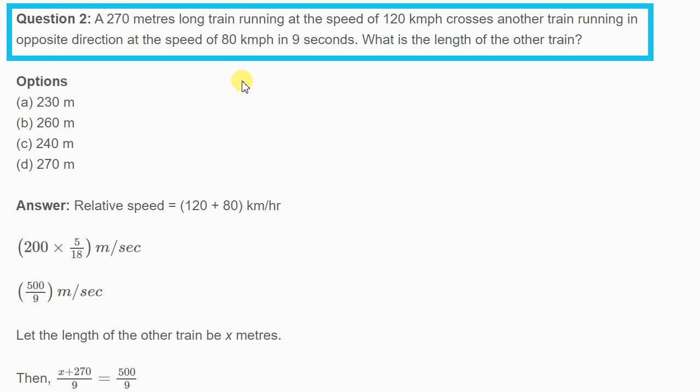Now next question: A 270 meter long train running at a speed of 120 km per hour crosses another train running in the opposite direction at a speed of 80 km per hour in 9 seconds. What is the length of the other train?